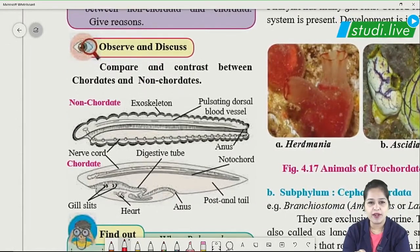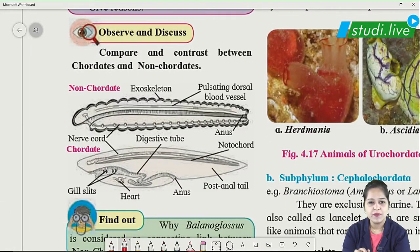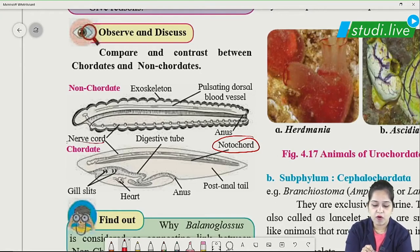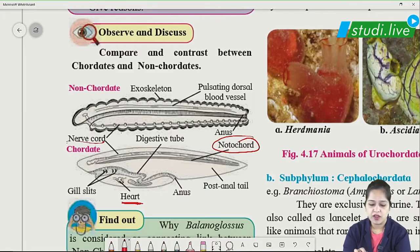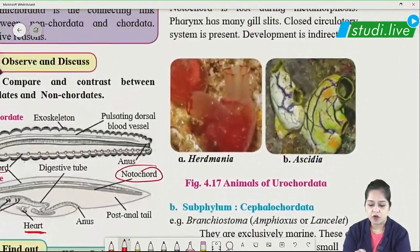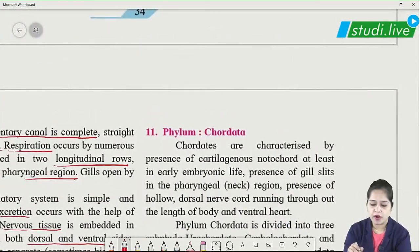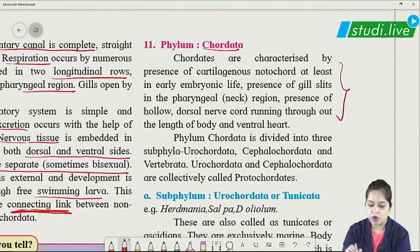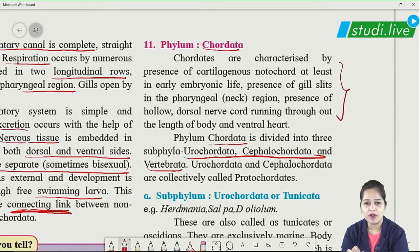Moving to Chordates — chordates have a notochord, non-chordates do not. In chordates the nerve cord is dorsal and heart is ventral, whereas in non-chordates it is the opposite. Phylum Chordata is divided into three sub-phyla: Urochordata, Cephalochordata, and Vertebrata. Urochordata and Cephalochordata are collectively called protocordates.